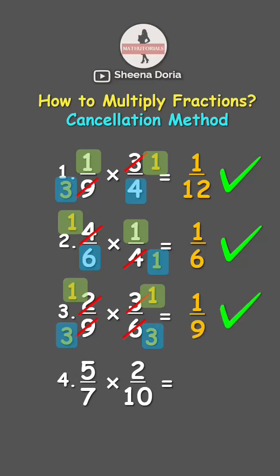Now it's your turn. Multiply 5/7 and 2/10 using the cancellation method. Comment your answer.